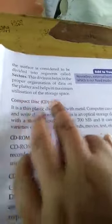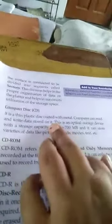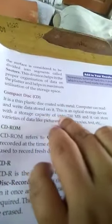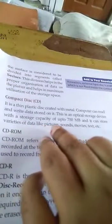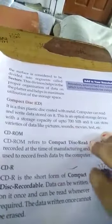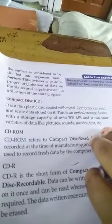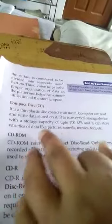Compact disc: It is a thin plastic disc coated with metal. Computer can read and write data stored on it. This is an optical storage device with a storage capacity of up to 700 MB, and it can store varieties of data like pictures, sound, movies, text, etc.